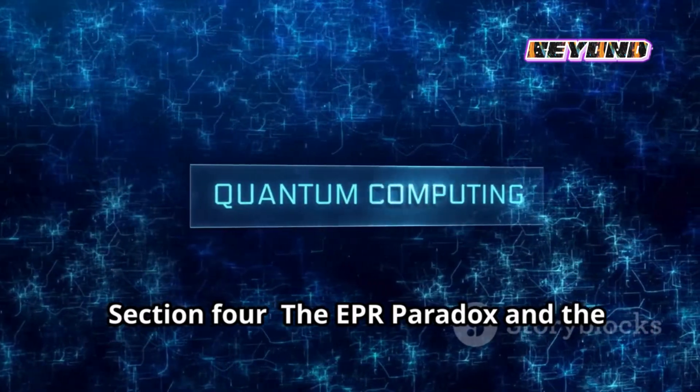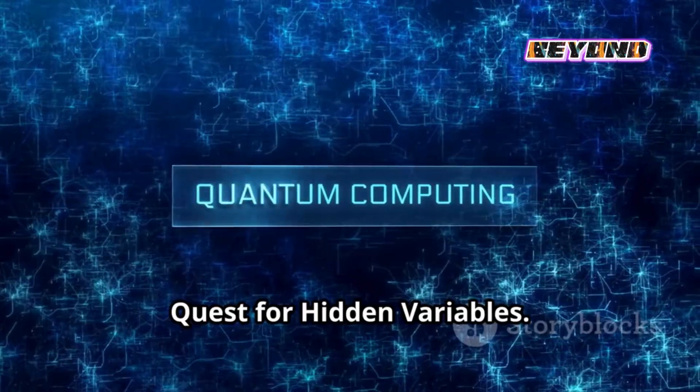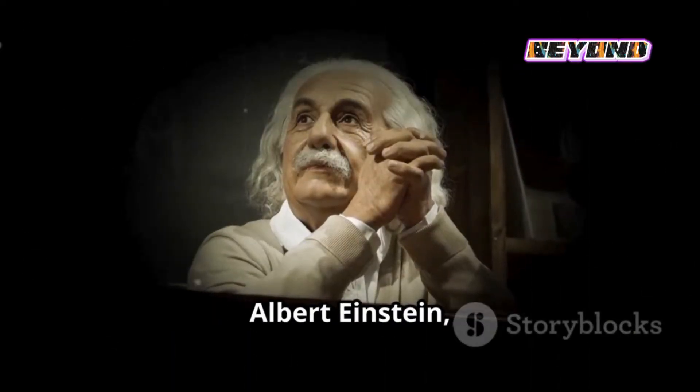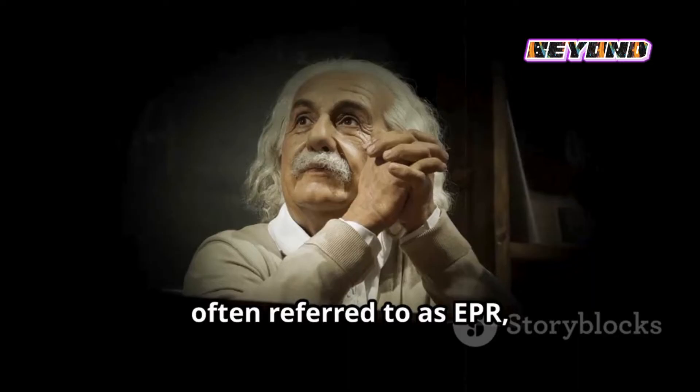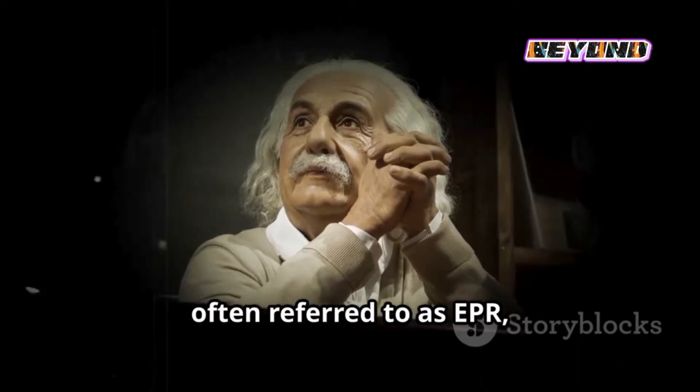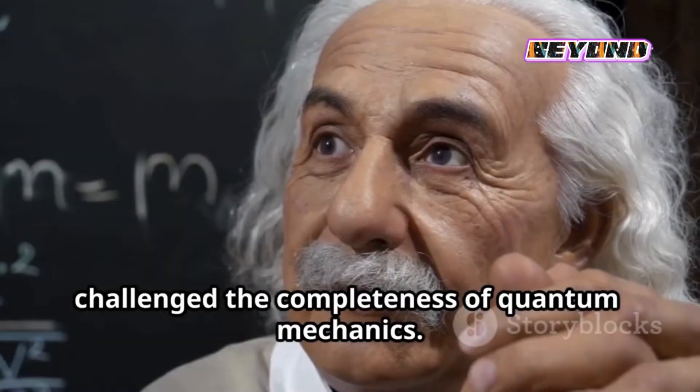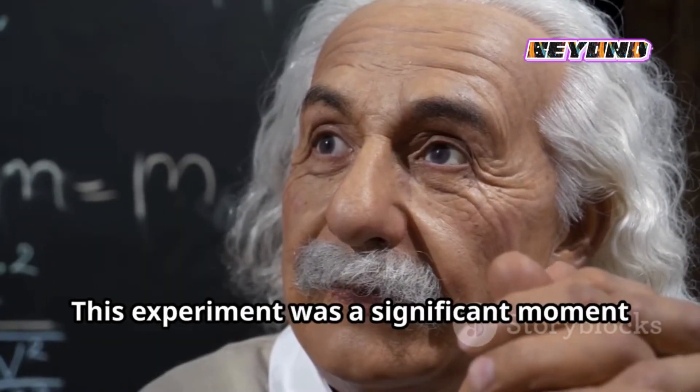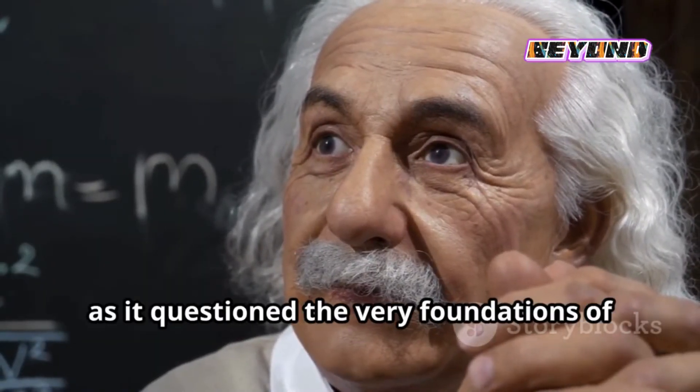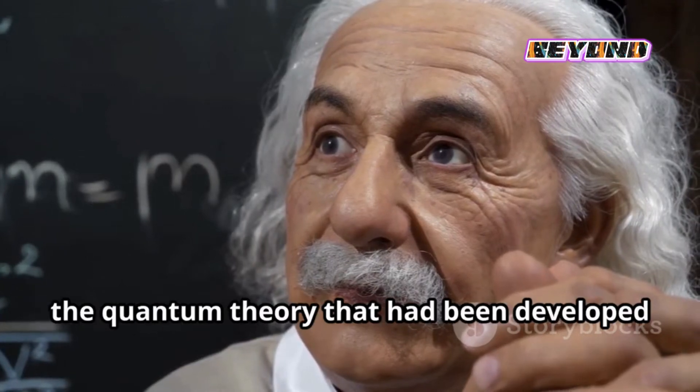In 1935, Albert Einstein, Boris Podolsky, and Nathan Rosen, often referred to as EPR, devised a thought experiment that challenged the completeness of quantum mechanics. This experiment was a significant moment in the history of physics, as it questioned the very foundations of the quantum theory that had been developed over the previous decades.